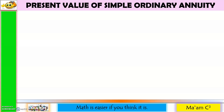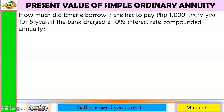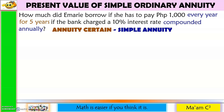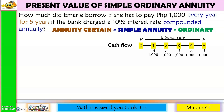Now let us talk about present value of simple ordinary annuity. How much did Emery borrow if she has to pay 1,000 pesos every year for 5 years if the bank charges a 10% interest rate compounded annually? This is annuity certain, and since nothing is mentioned about the time of payment, we assume this is an ordinary annuity. We are going to use the same cash flow, but the idea now is to bring payments back to their present value using the present value formula in compound interest.